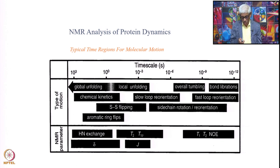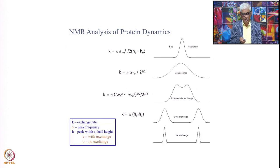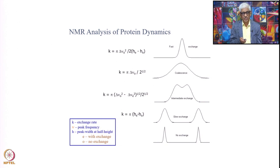I already talked about the particular aspect of millisecond to microsecond time scale motions. These are conformational exchanges, two-site chemical exchange. We talked about this last time, and also how depending upon the exchange rate and the chemical shifts of the individual sites, the lines will change in character and line widths will change — how they merge depending upon the exchange rate versus the chemical shift difference between the two.